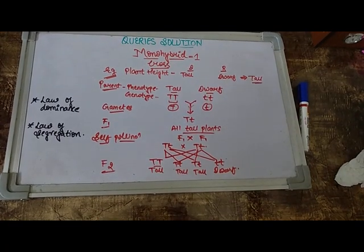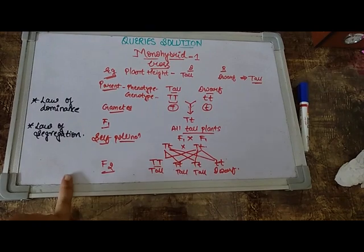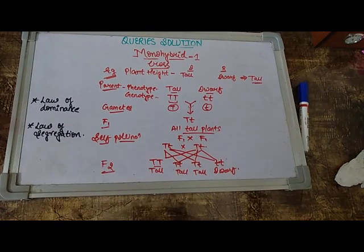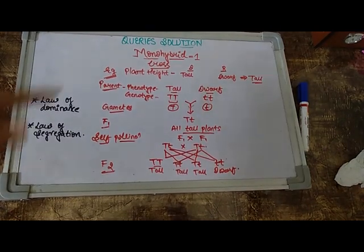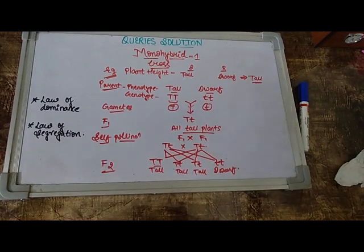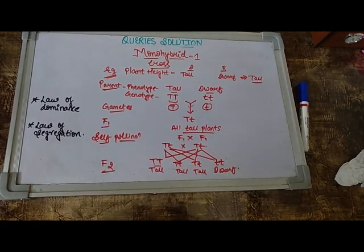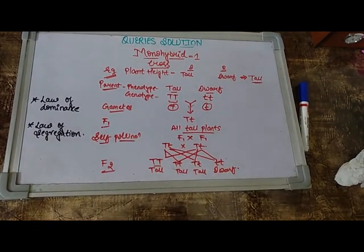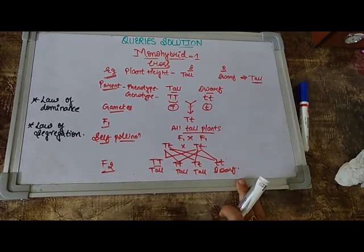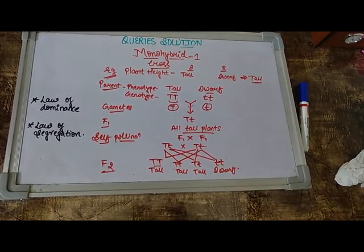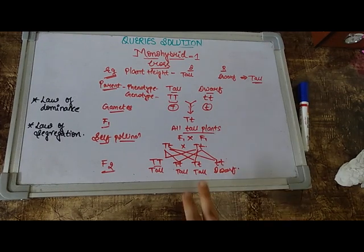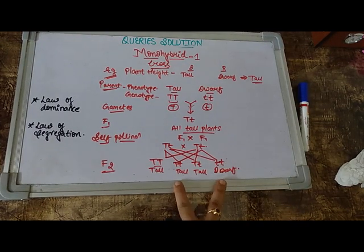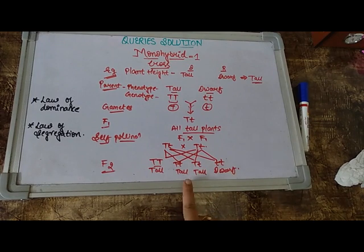So I hope now you will be at least able to draw any monohybrid cross given to you. And as I said you, this is just one example of plant height that we had taken. But any character can be given to you to draw a cross and in the same manner you should write. And again I will say you, the marks always goes at step wise. So do not avoid any step which is there because again you have to get marks based on the steps individually.